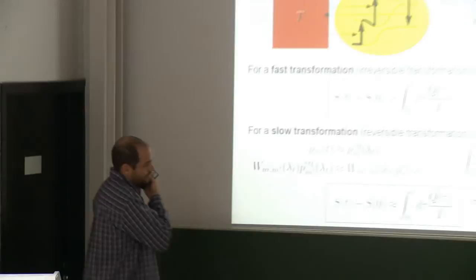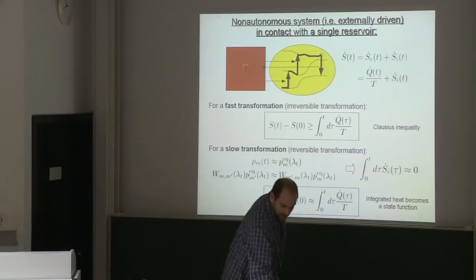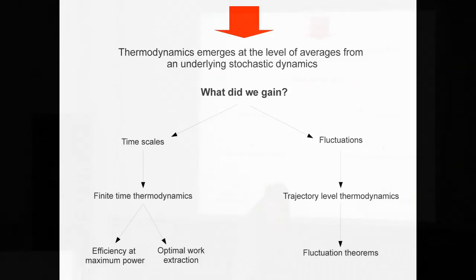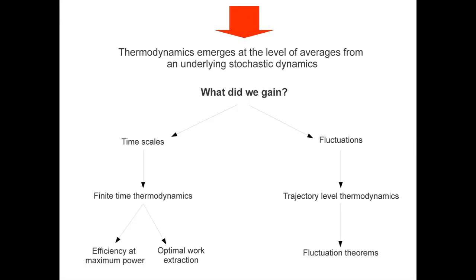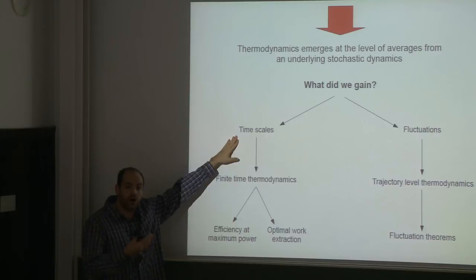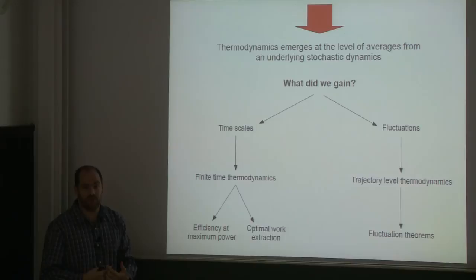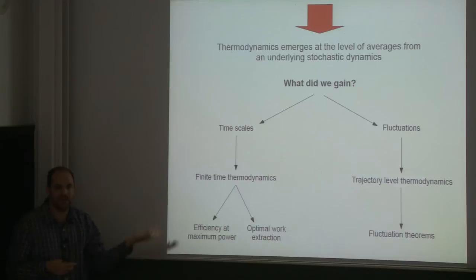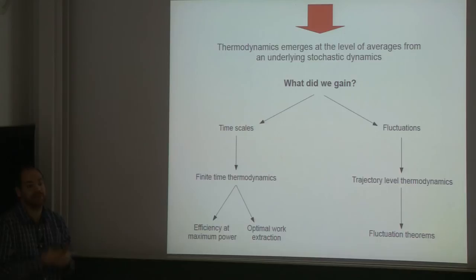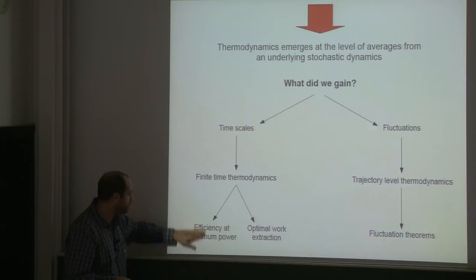This was the first part on the theoretical aspects of stochastic thermodynamics. What did we gain with respect to standard thermodynamics? The crucial point is that we gain time scales, because now we have a kinetic description of the underlying processes. We have the time scales in the thermodynamic description which we didn't have before. So we can do time-dependent or finite-time thermodynamics. We put time scales into thermodynamics — and this is why we will be able to study efficiency far from equilibrium.